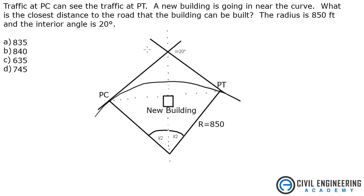We're given this little diagram. We've got a new building coming in here in the middle, and the radius of this curve right here. They want to know how close to this curve we can get where they can still see between PC and PT. What we need to find is, if we call this point A and this point here point B, we need to find that distance A to B.